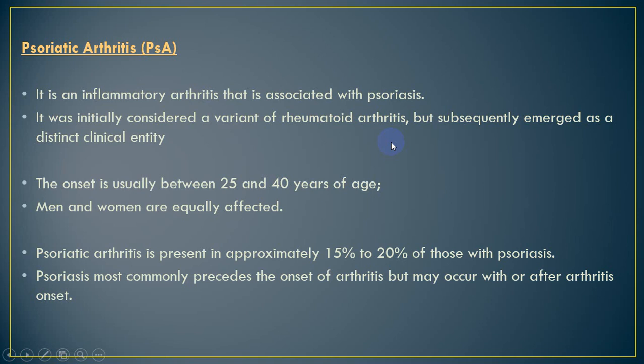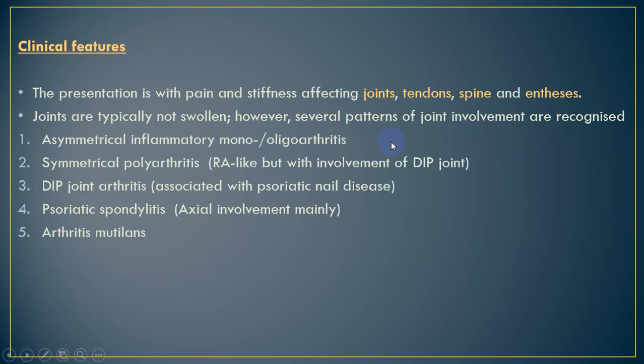Psoriasis most commonly precedes the onset of arthritis, but in some patients the disease starts with arthritis and skin lesions develop later. The presentation is typical with pain and stiffness affecting the joint, tendon, spine, and enthesis. Joints are typically swollen but painful, and there are several patterns of joint involvement in patients with psoriatic arthritis.